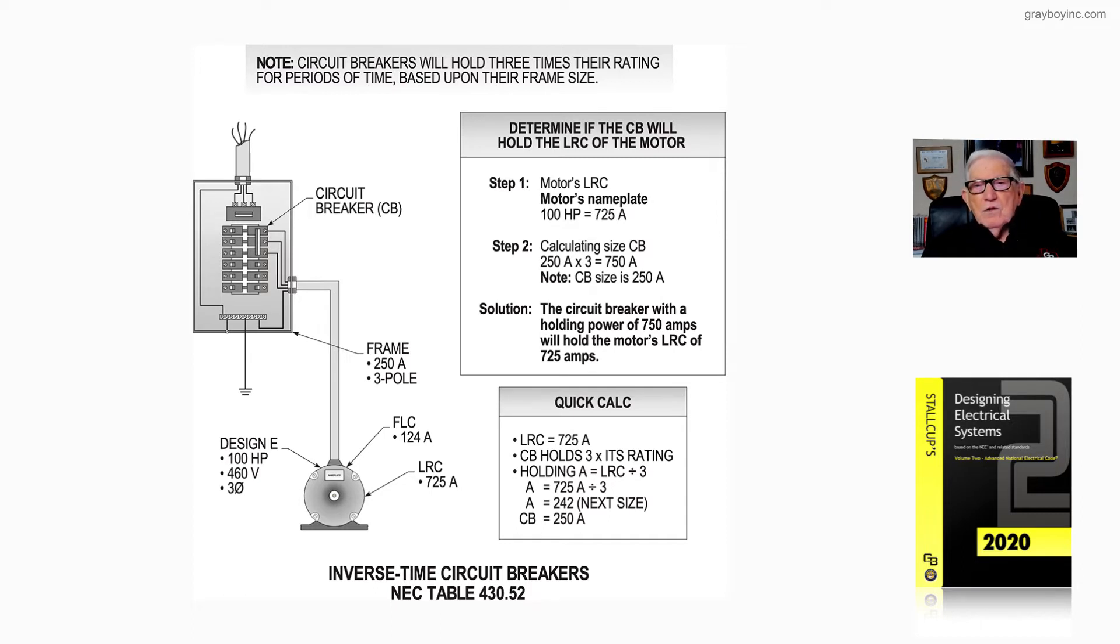We're going to determine what size circuit breaker would allow this motor to start based upon the LRC. Step one: 100 horsepower, 725 amp. We're saying that is the starting current value.